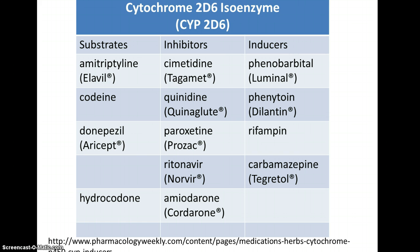This table is very similar to the one I showed you previously, in that I'm demonstrating some substrates, some inhibitors, and some inducers of CYP2D6. CYP2D6 is another cytochrome P450 enzyme. It's unique in that it's responsible for the metabolism of approximately 25% of known drugs and xenobiotics, making the CYP2D6 pathway very important in the disposition of drugs in the human body.